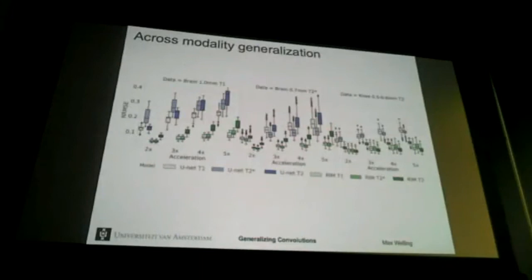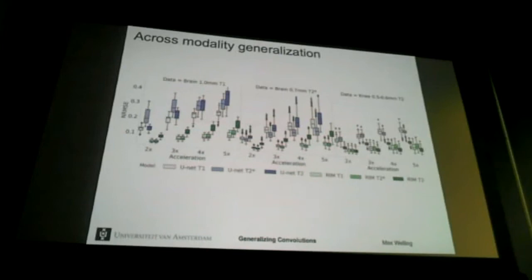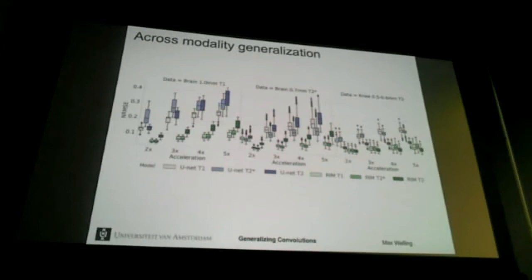Comparing the RIM against U-net across different domains: models trained on brain T1, brain T2-star, and knee MRI are tested on all domains. The RIM is better because of the embedded generative model. Strikingly, training on a knee and testing on a brain still works very well — which was surprising to me. This means the model has learned something general about MRI reconstruction, not just overfitted to one anatomy.